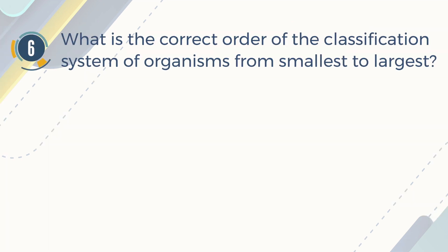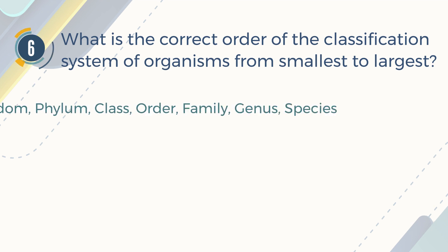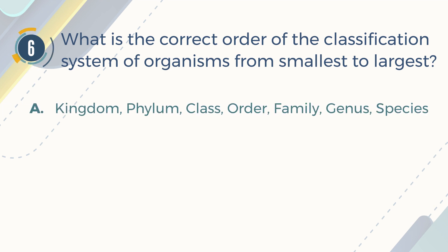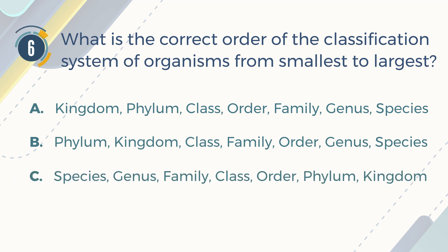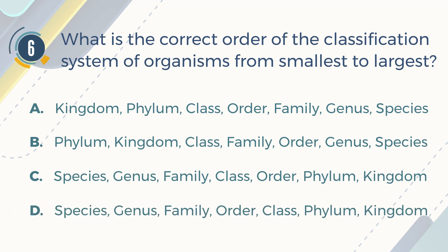Number 6. What is the correct order of the classification system of organisms from smallest to largest? A. Kingdom, Phylum, Class, Order, Family, Genus, and Species. B. Phylum, Kingdom, Class, Family, Order, Genus, and Species. C. Species, Genus, Family, Class, Order, Phylum, and Kingdom. D. Species, Genus, Family, Order, Class, Phylum, and Kingdom.